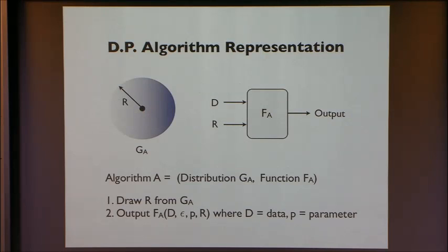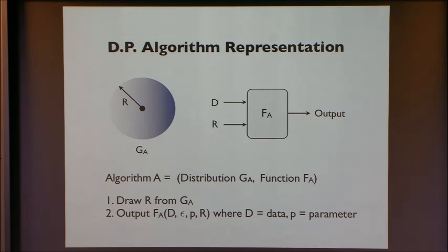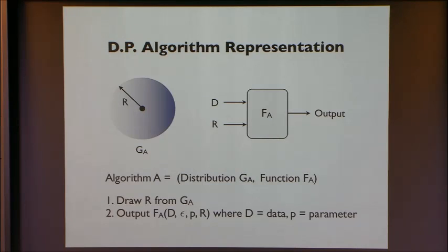Let me use one more definition. I'm going to represent a differentially private algorithm in a slightly different way. This algorithm A, because it's a randomized algorithm, can be written as a tuple. The first item is a distribution G_A, which is independent of the sensitive data. The second item is a deterministic function F_A. The procedure works as follows: you draw random numbers R from G_A, and then output F_A of D and the other parameters and R. The randomness is concentrated in the draw R, and you output a deterministic function of that random number.